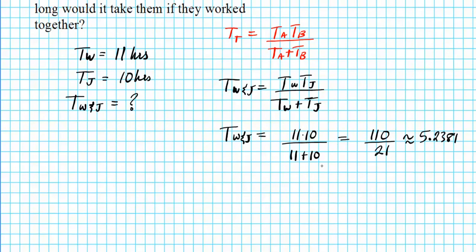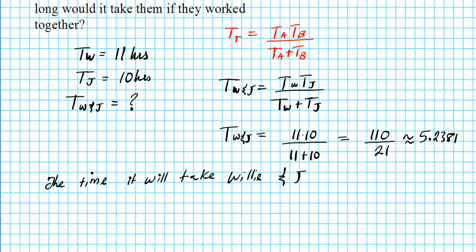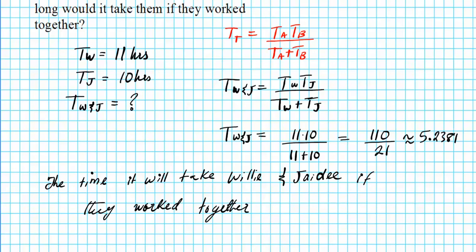Let's contextualize our results. The time it will take Willie and JD if they work together is 5.2381 hours.